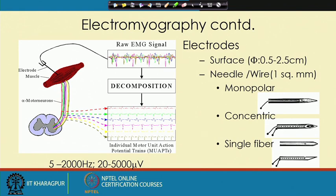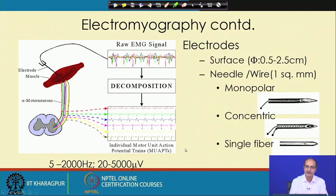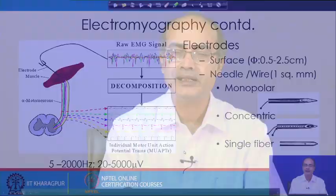In the case of EMG, the signal strength is again small — in the microvolt range, as shown here — but the frequency is much higher. For both ECG and EEG the frequency range was below 100 Hz, whereas for EMG it starts from 5 Hz up to 2 kHz. So the frequency band is much bigger, and the signal looks more like a noise signal. Just like EEG, we cannot identify a clear shape; rather, we have to analyze what looks like a random signal and try to quantify it.